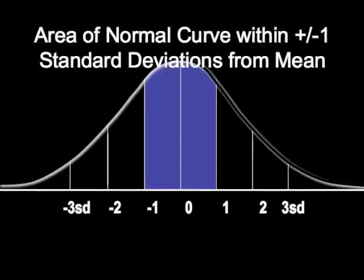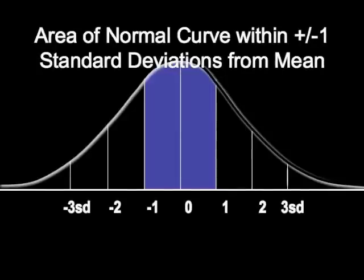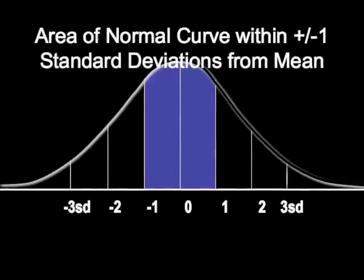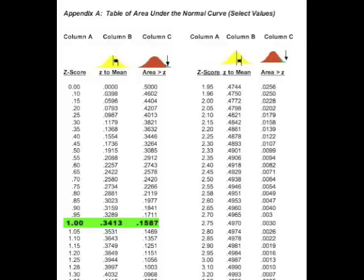How do we know this information? Where do we get this information? We get this from looking at a table of the area under the normal curve. This table represents the area under the normal curve and is included in Appendix A of your textbook.